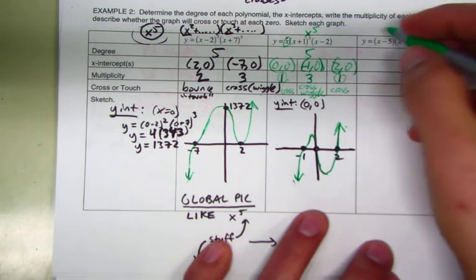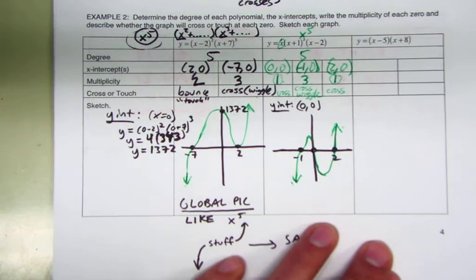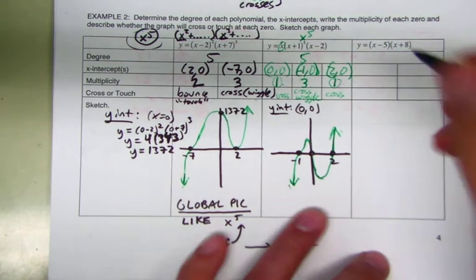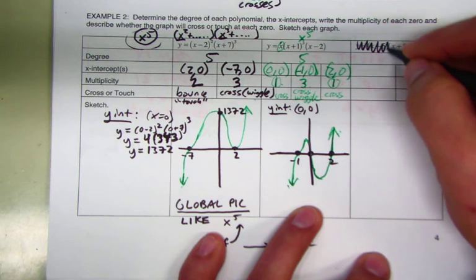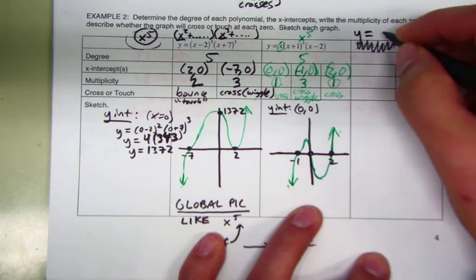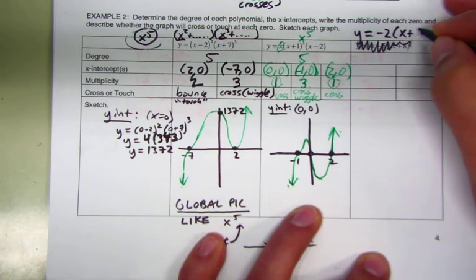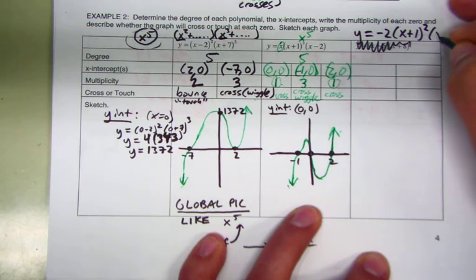Why don't you guys try this one on your own? I'm going to change it — that's too easy. We're going to do y equals negative 2 times (x + 1) squared times (x − 3) squared.